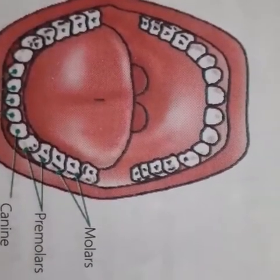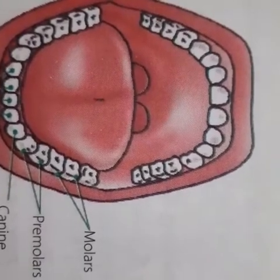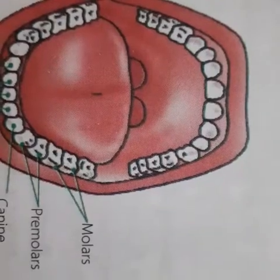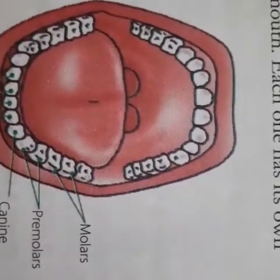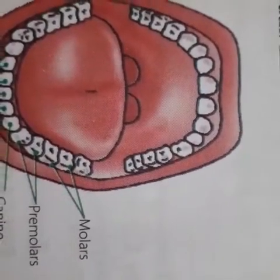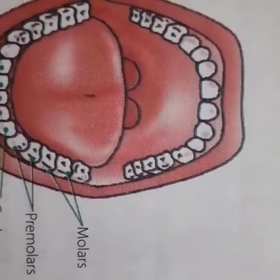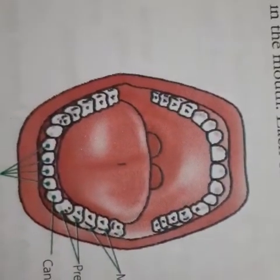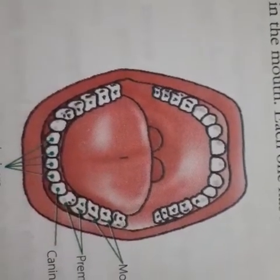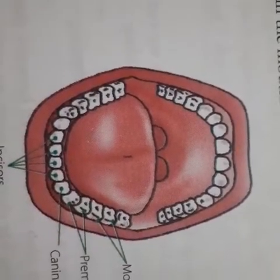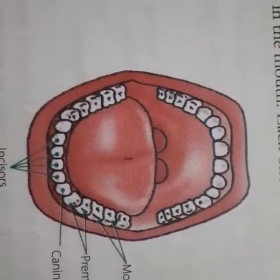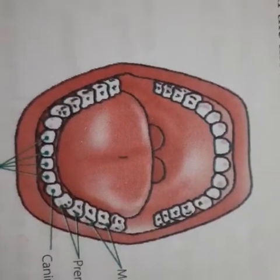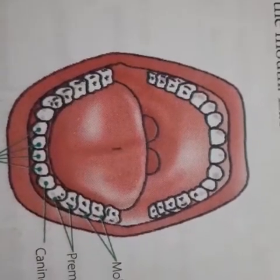When the baby is about 6 months old, the teeth start appearing. By the time she is about 3 years old, she has 20 teeth. These teeth are called milk teeth. At the age of 6, the milk teeth start falling out and new teeth appear in their places.